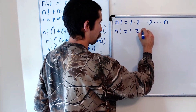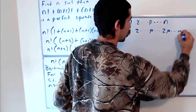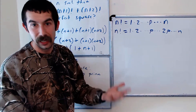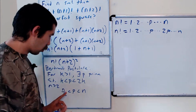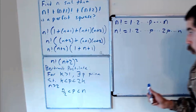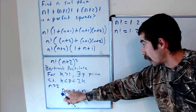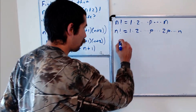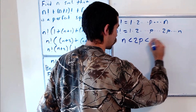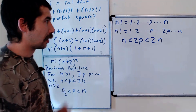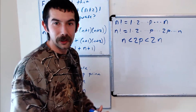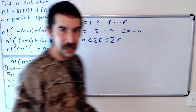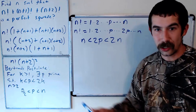If n factorial were a perfect square, p would have to appear at least twice in the product — up to p, then up to 2p, then up to n — meaning 2p would be less than or equal to n. But we know p is between n/2 and n, so multiplying by 2 gives n is less than 2p, which is less than 2n. This means 2p is greater than n, contradicting the requirement. So for n greater than 2, n factorial is not a perfect square.